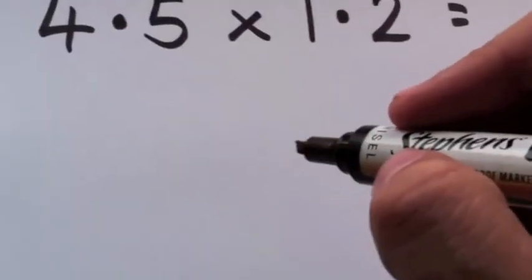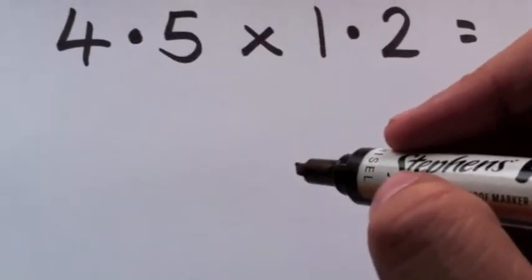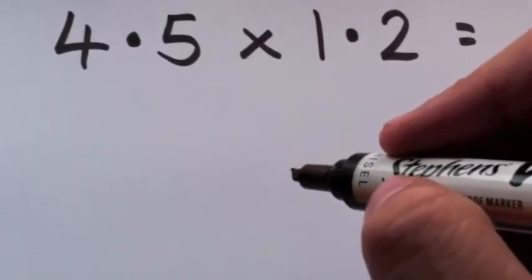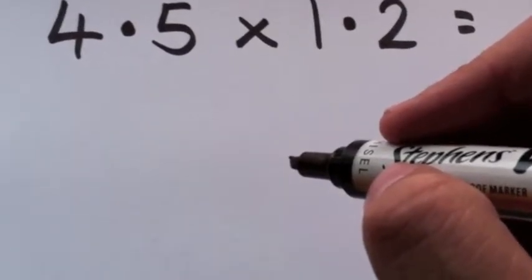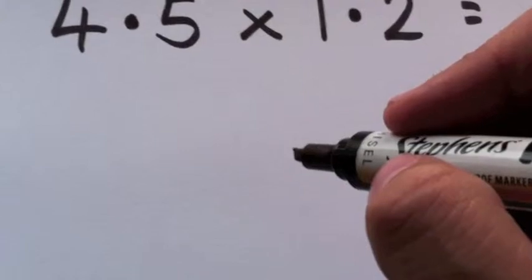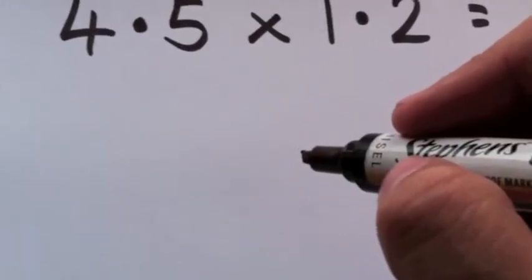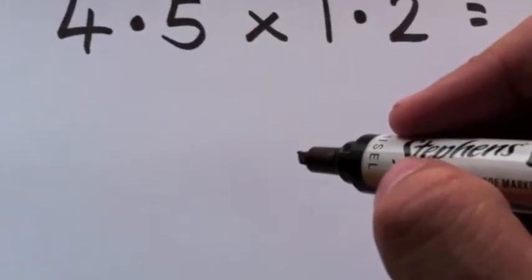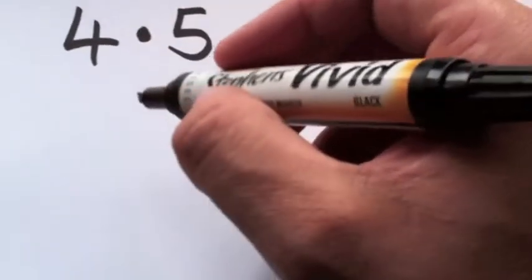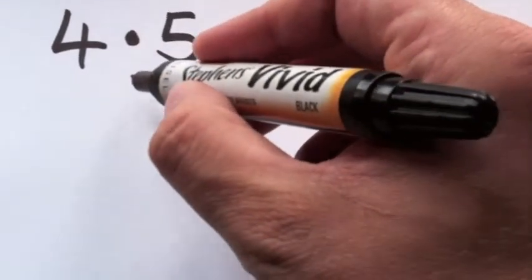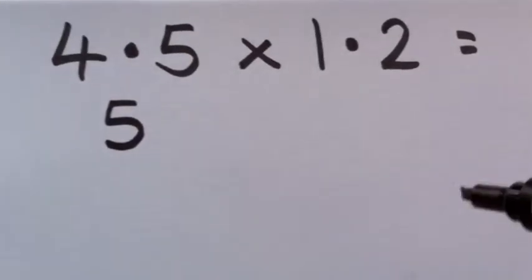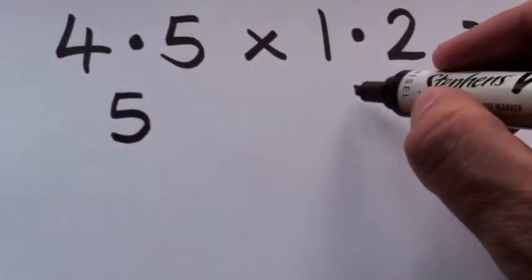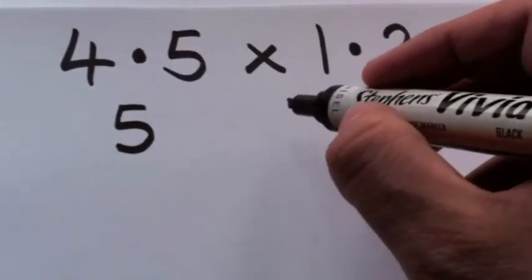What you're going to do first of all is something called estimating. So you're going to make an estimate of what your answer is going to be. To make an estimate, you're going to round. So we always round up from 5, so we're looking at 4.5, then 5 is going to be your closest. And if we're looking at 1.2, then 1 is going to be your closest.